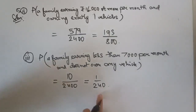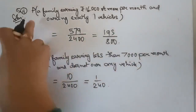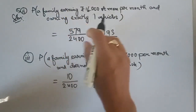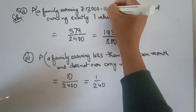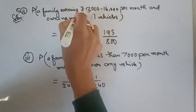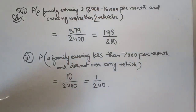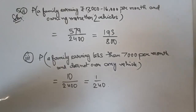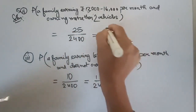Roma number 4: Find the probability of a family earning between rupees 13,000 and 16,000 per month and owning more than two vehicles. Looking at the table, the number of such families is 25. The probability is 25 by 2400, which equals 1 by 96. So the required probability is 1 by 96.